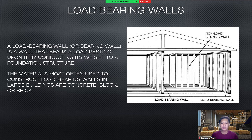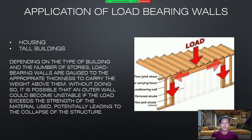A load bearing wall is a wall that bears a load resting upon it by conducting its weight to a foundation structure. The materials most often used to construct load bearing walls in large buildings are concrete, block, or brick. Depending on the type of building and the number of stories, load bearing walls are gauged to the appropriate thickness to carry the weight above them. Without doing so, it is possible that an outer wall could become unstable if the load exceeded the strength of the material used, potentially leading to the collapse of the structure.